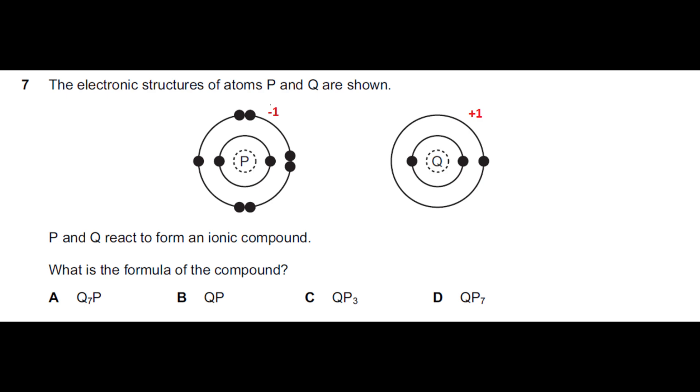Where Q is having 1 electron in the outermost shell so it is easy for it to lose 1 electron, having plus 1 valency. The reason is it is a metal and metals have a tendency to lose electrons. My question says P and Q react to form an ionic compound. What is the formula of the compound?